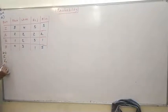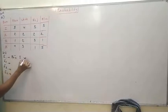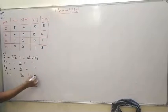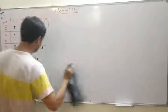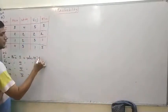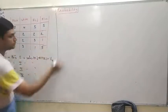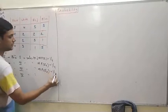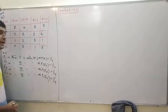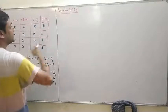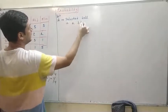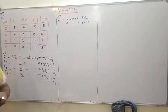Here we assume four events: E1 is box one is selected, E2 is box two is selected, E3 is box three is selected, and E4 is box four is selected. Since each box is equally likely, P(E1) equals P(E2) equals P(E3) equals P(E4) equals 1 by 4. Event A is the selected ball is black.